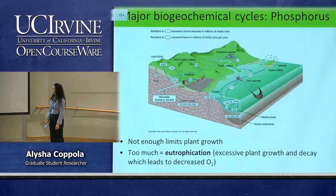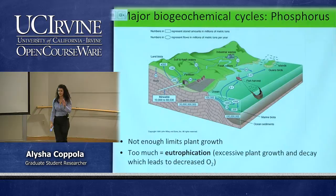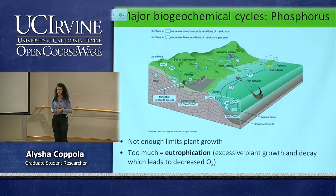We apply so much phosphate onto land because of fertilizer — we want things to grow to support our community and population, so we add excessive fertilizer that ends up running off into the ocean.